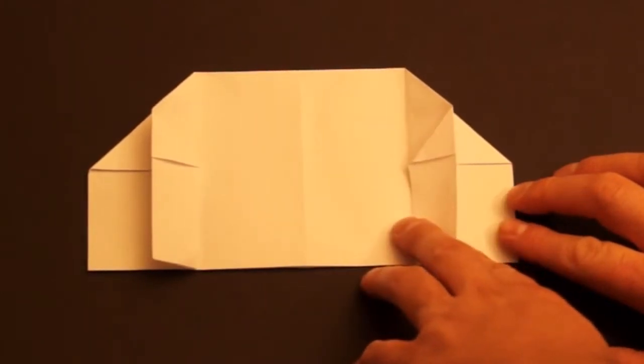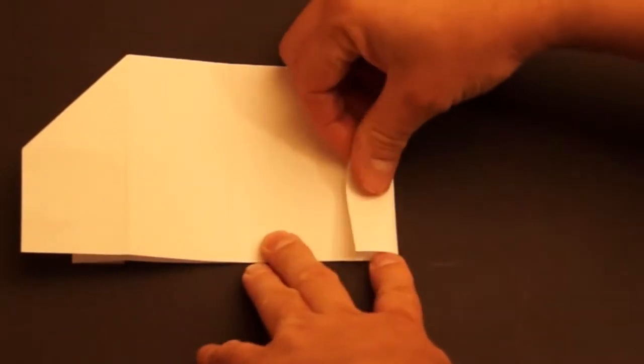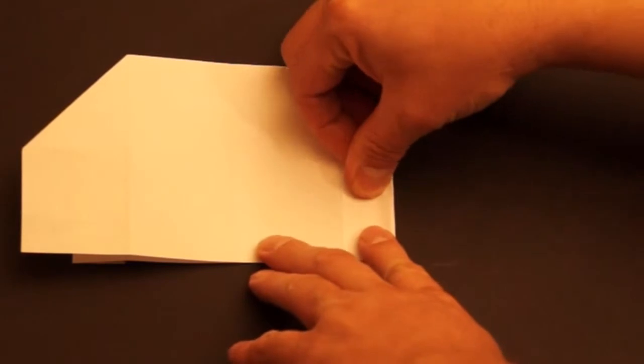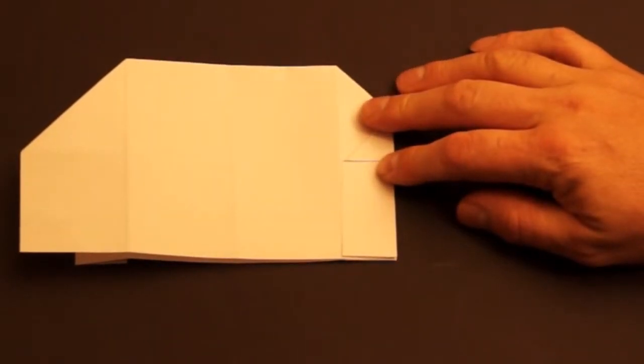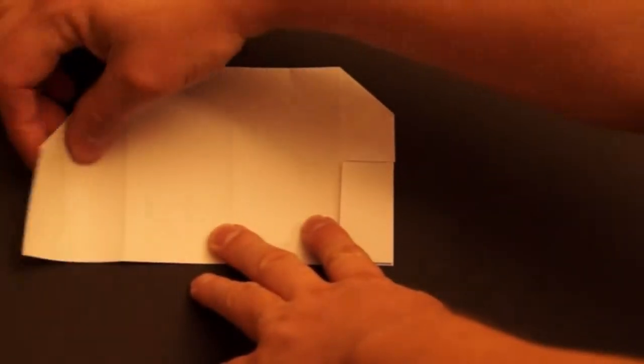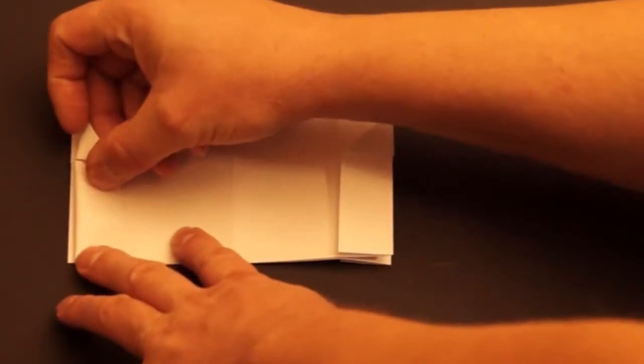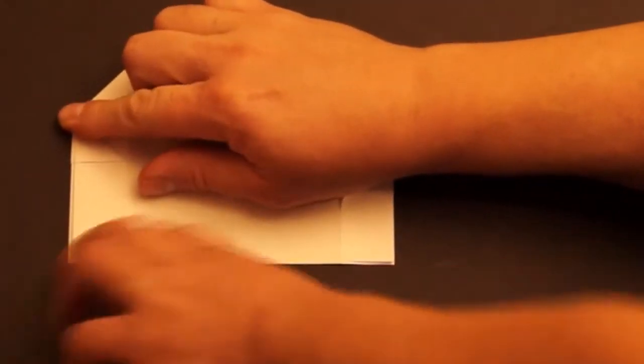Okay, turn it over and do the same thing on the back. Take the outside edge and fold it over to the first crease. Fold the left over to this crease. It should line up with the ones we just did on the back.